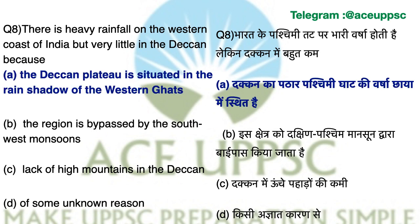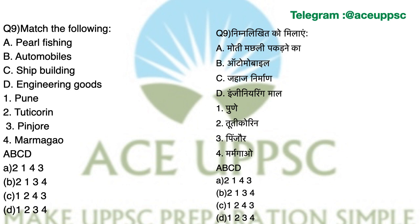Question number 9. Match the following industries to their locations. The answer is A: 2, 1, 4, 3. Pearl fishing is in Tamil Nadu, automobiles in Pune, shipbuilding in Marmagao, and engineering goods in Pinjar.